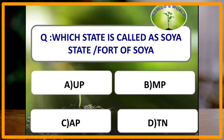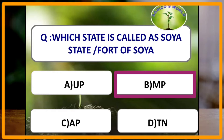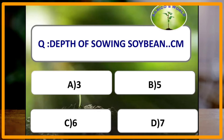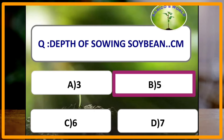Which of the following state is called as soya state or fort of soya? The answer is Madhya Pradesh, because soya bean is extensively cultivated in Madhya Pradesh. Depth of sowing of soya bean is how many centimeters? The answer is 5 centimeters. As soya bean is a bold seeded crop, it is generally sown at 5 centimeters.